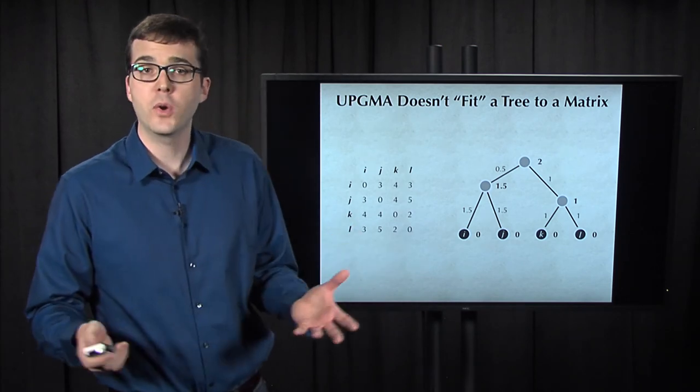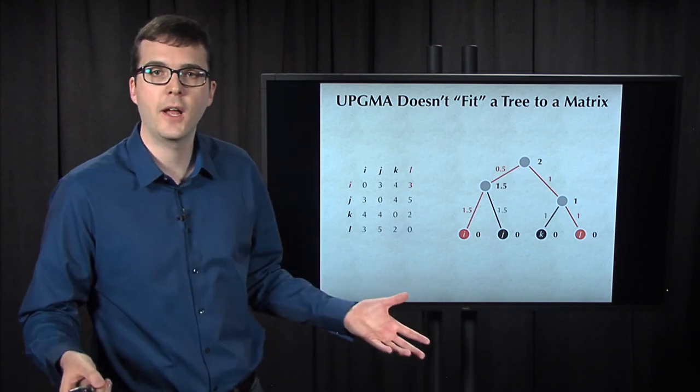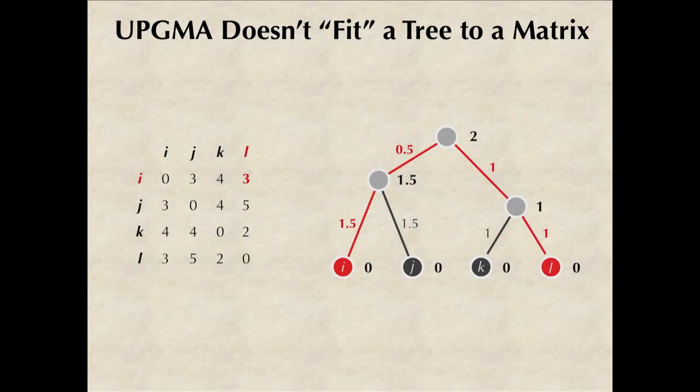So we know that the tree produced by UPGMA can't possibly fit this matrix because the matrix is non-additive. You can see, for example, that the distance from I to L is 3 in the distance matrix, but it's 4 according to the UPGMA tree.